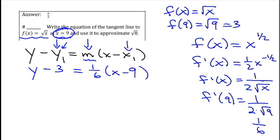Now, maybe where some of you got confused is where they said, use it to approximate the square root of 8. Well, what they're saying is use it to approximate f of x when x is 8 because if I put an 8 in for x, don't I have the square root of 8?